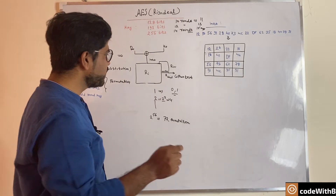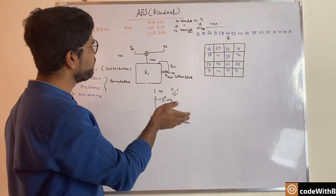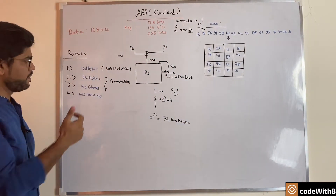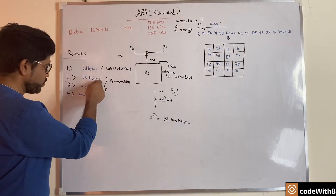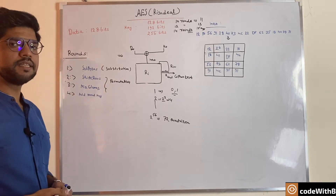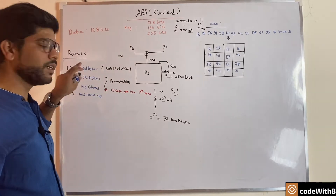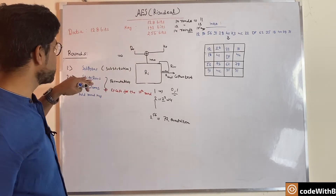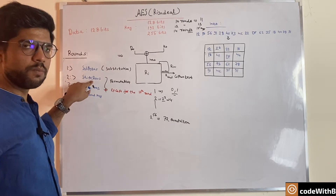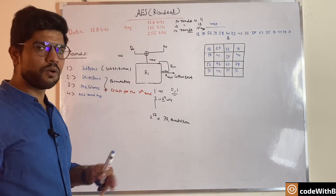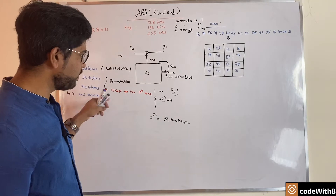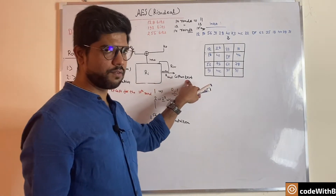In the 10th round, which is the final round for 128-bit, the sub-byte and shift rows steps happen, but the mix column step does not happen. Whatever data we receive after shift rows is then XORed with the round key of the 10th round, and then we get our ciphertext.